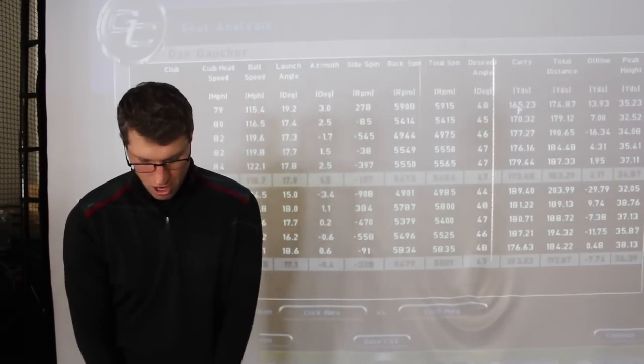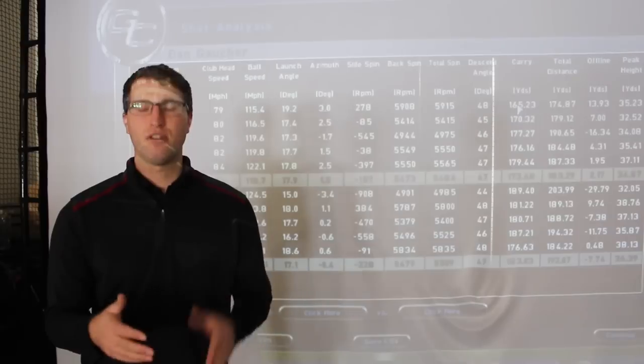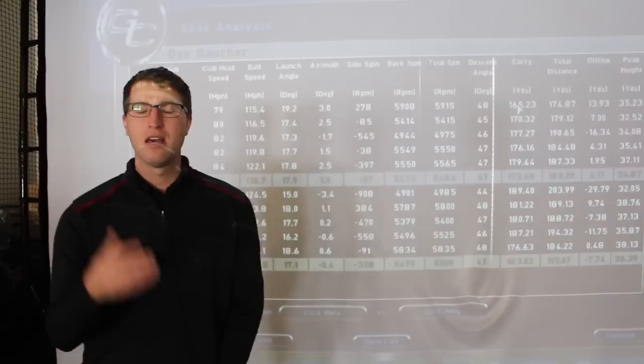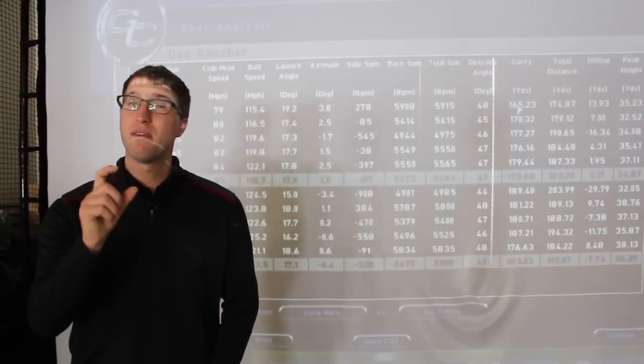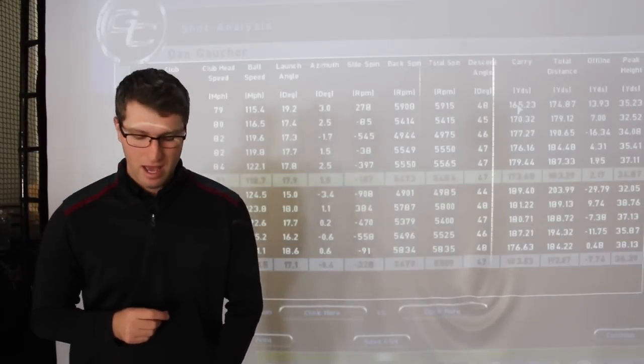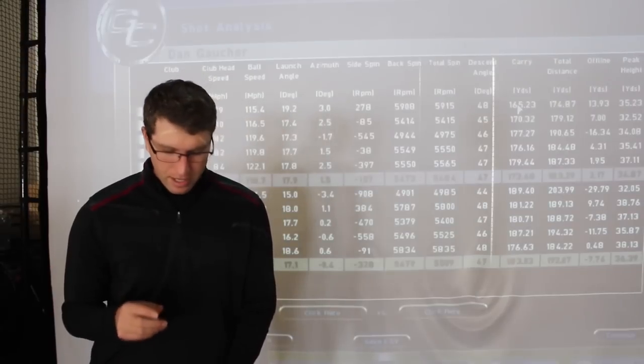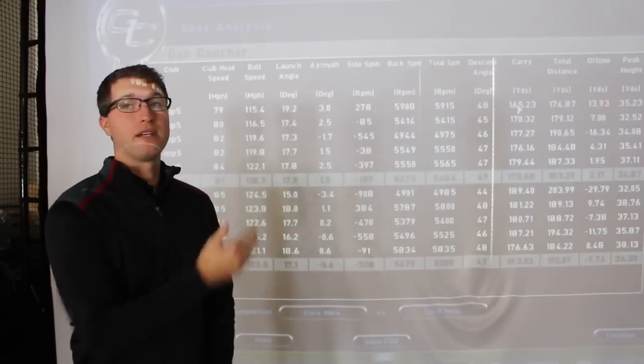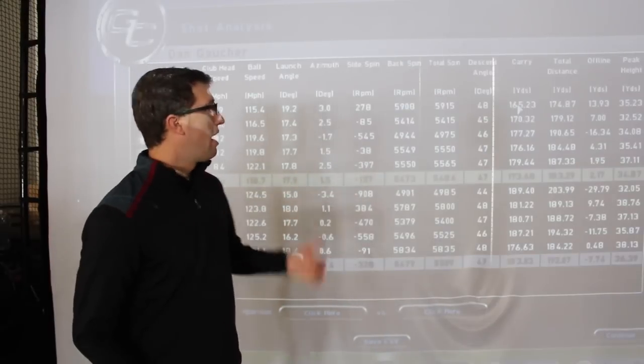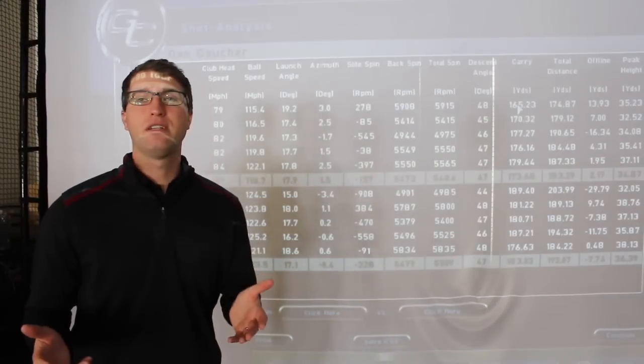And as far as the looks go, very, very similar head shape, similar head size. I would almost venture to say that the 900 tours are maybe even just a little bit smaller of a head. Top line might be a little bit thicker. But again, overall performance, really impressed to see how close they were. Even though the feel of the two were very different here.